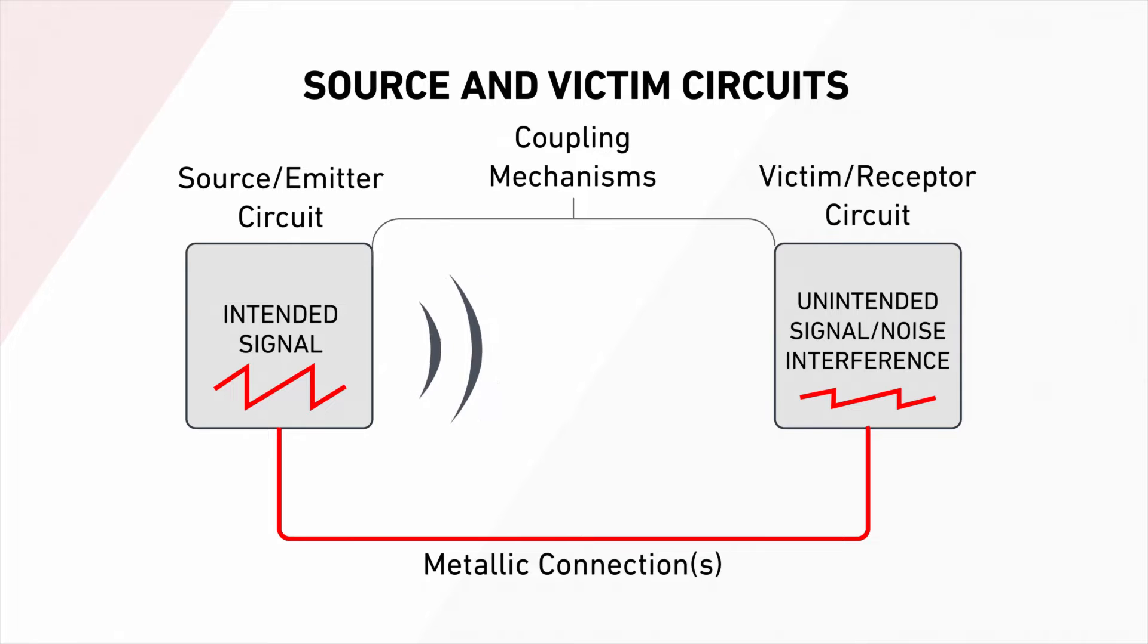The three main mechanisms by which noise is transmitted to the victim circuit, or equipment, are capacitive, inductive, and conducted coupling.